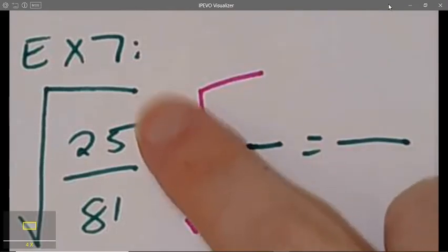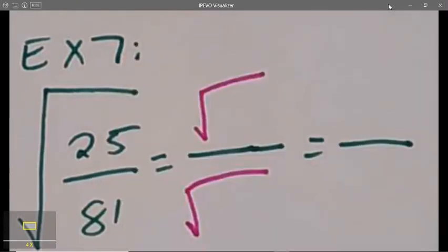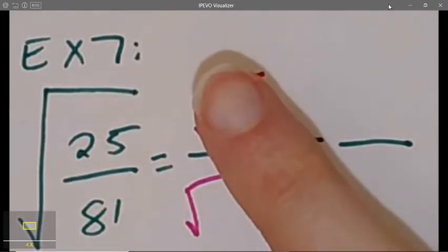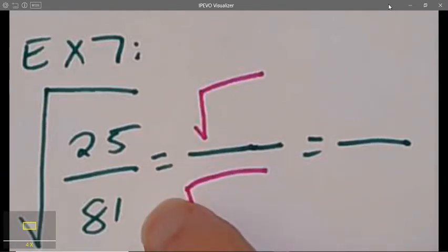All right, so I cannot simplify 25 over 81. It will not reduce down, but if you notice, I can square root 25, and I can square root 81.